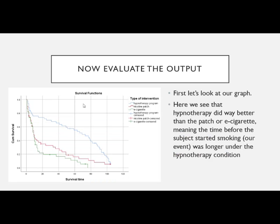You'll have a lot of output. First, go to the graph. The blue line is the hypnotherapy program, the red line is the nicotine patch, and the green line is the e-cigarettes. The little plus signs on the lines denote when somebody was censored. We want to see which line stays highest the longest. Hypnotherapy did way better than the patch or e-cigarette, meaning the time before the subject started smoking again was longest under the hypnotherapy condition. So the best was hypnotherapy, then the patch, then e-cigarette.